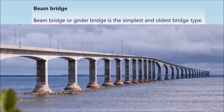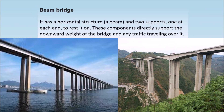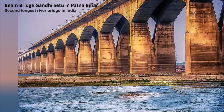A beam bridge or girder bridge is the simplest and oldest bridge type. It has a horizontal structure, a beam, and two supports, one at each end, to rest it on. These components directly support the downward weight of the bridge and any traffic travelling over it. Gandhi Setu in Patna, Bihar is an example of a beam bridge.